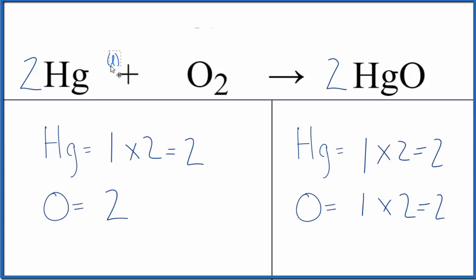Mercury is kind of interesting. It's a metal, but it's a liquid at room temperature. Oxygen, that's a gas. And then this mercury oxide here, that's going to be a solid.